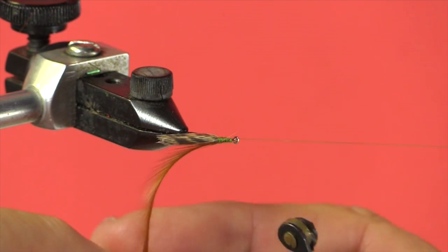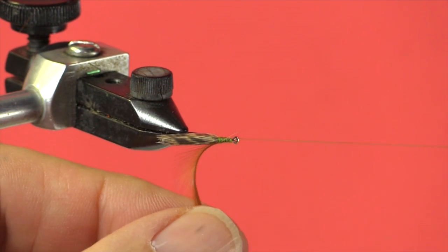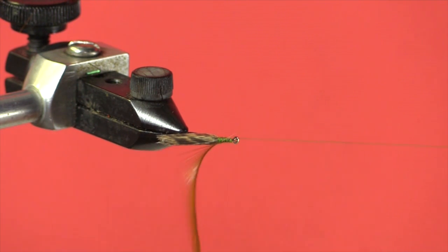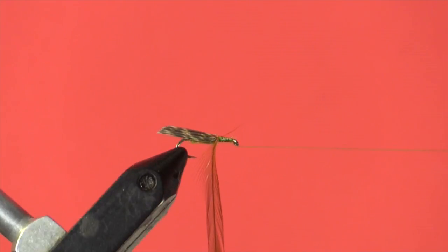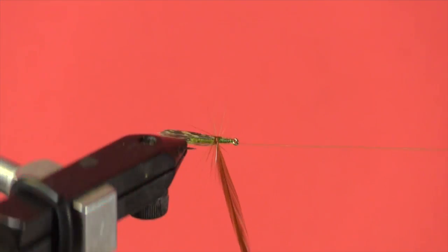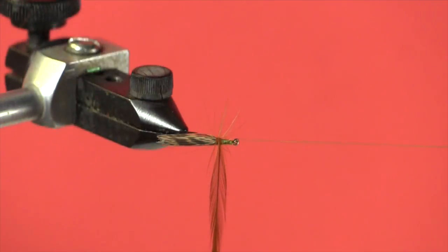Now this is the tricky bit. We don't want to break this very delicate dry fly hackle, so you have to proceed rather carefully. We want to wind our hackle on with the winds going in front of the previous wind.